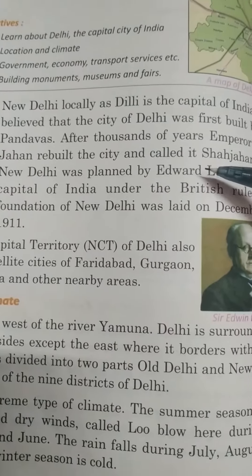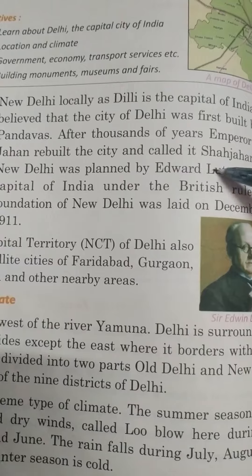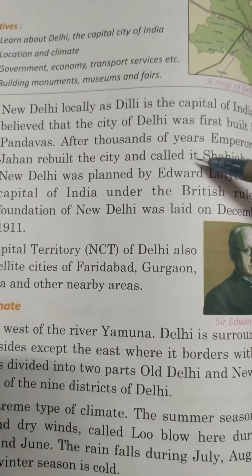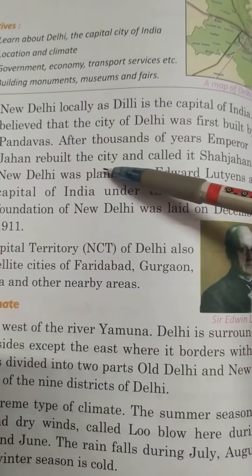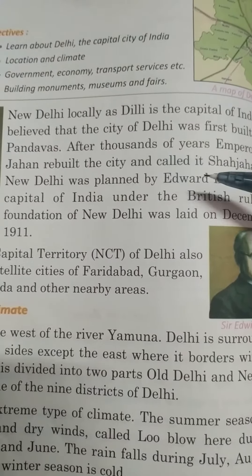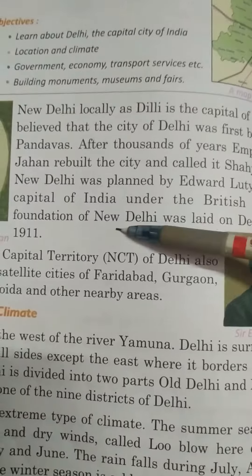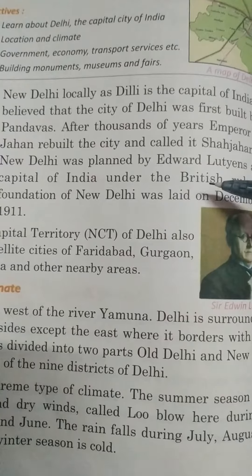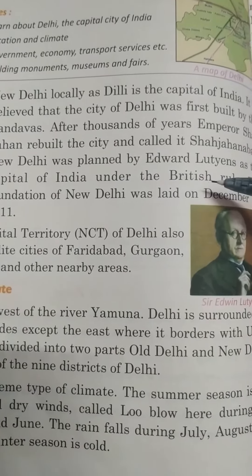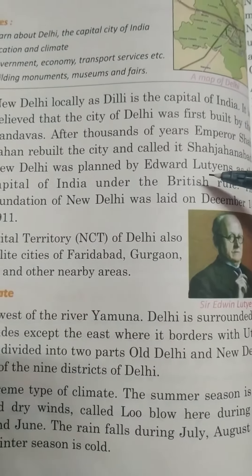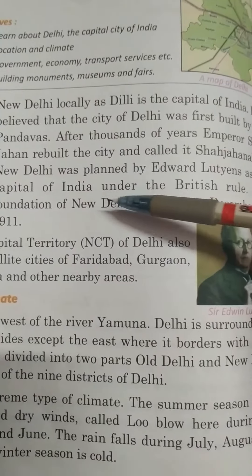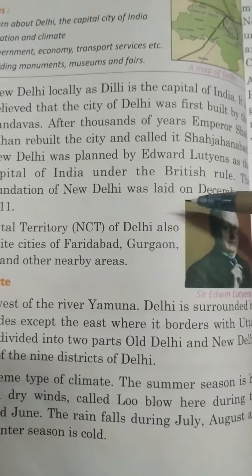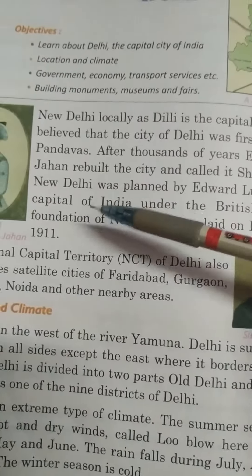After thousands of years, Emperor Shahjan rebuilt the city and called it Shahjan Vaz. The foundation of New Delhi was laid on December 15, 1911.